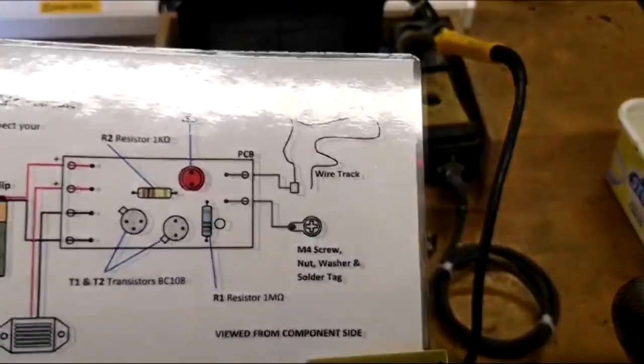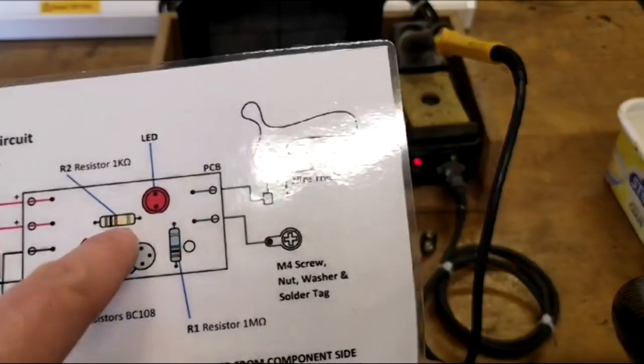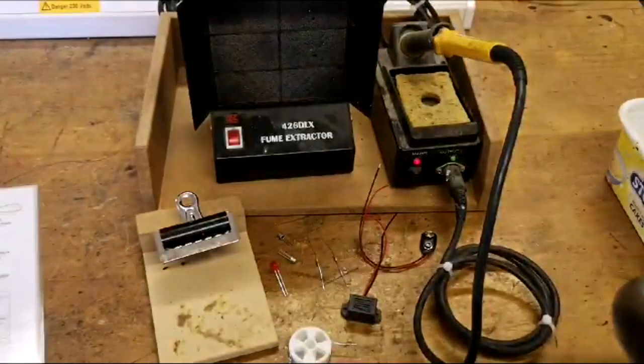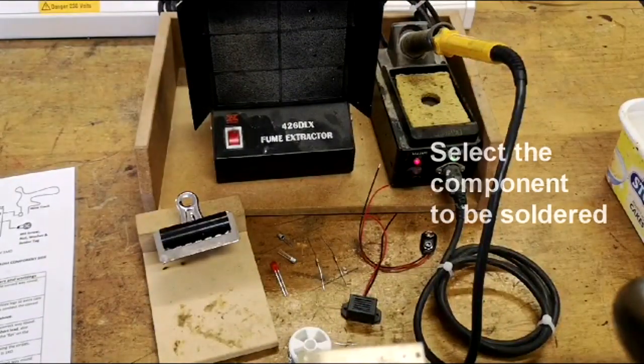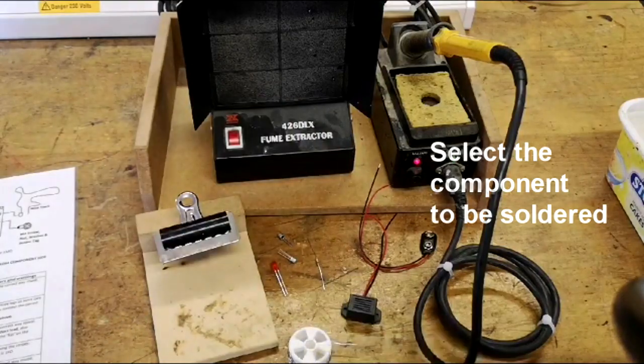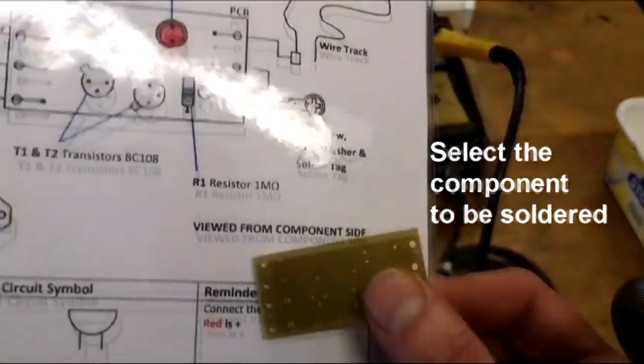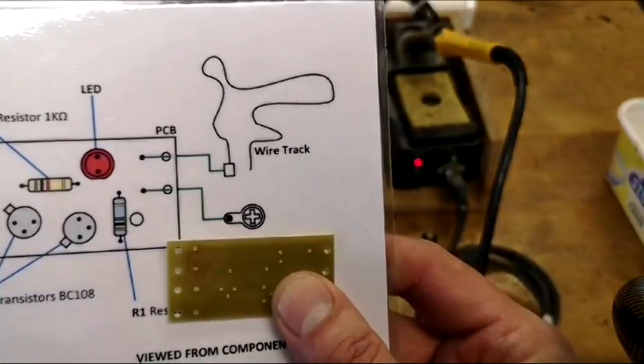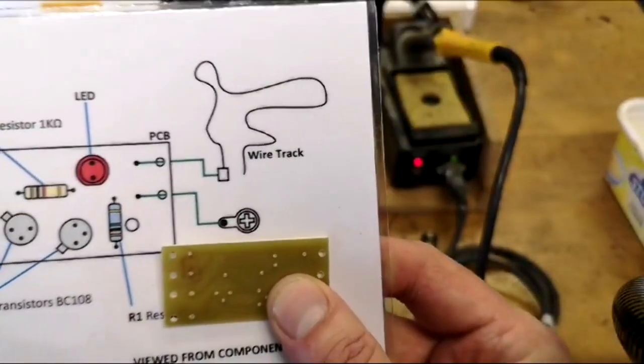So if we start with our R2 resistor, which is one kilo-ohm, pay attention because the two different resistors have got different color bands, so I need to locate the one that's got a red band as part of it. If I do that and I look at my diagram, we can see that there are two holes for the LED, so that must be those two holes there, and then there are two holes for the resistor.